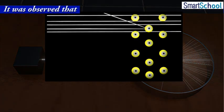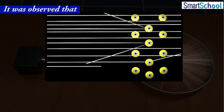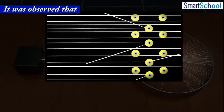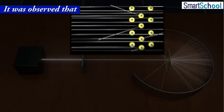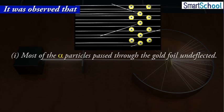It was observed that: most of the alpha particles passed through the gold foil undeflected.